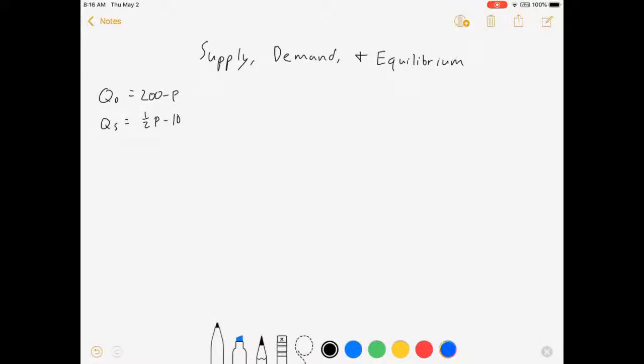So, here's our demand curve. Quantity demanded is equal to 200 minus P. Quantity supplied is 1 half P minus 10. And that's all we get. Now, let's do a quick recap of whatever you've already learned in maybe your intro class.